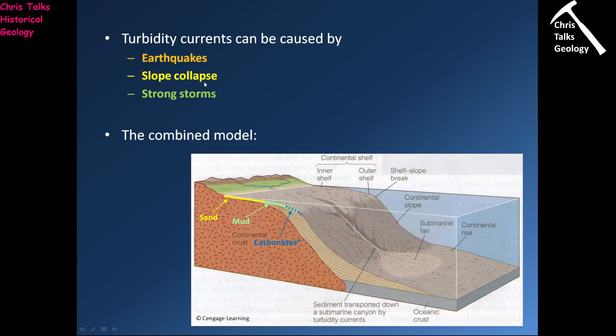The next option is slope collapse. Typically, what could happen is you can have a buildup of sediment at the edge of the continental shelf. If that layer of sediment reaches the angle of repose — the maximum angle at which your sediment is stable — those sediments will naturally begin to slump. If you've ever built a sandcastle, you'll know that as you add more and more sand, eventually you'll see sand sliding down the side because you've exceeded the angle of repose. The sand doesn't have enough cohesion to hold itself together, and so it naturally slides. The same goes for marine sediments, and this material will start to slide and come down the continental slope.